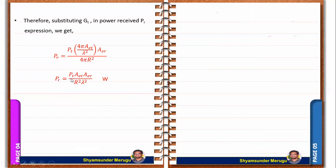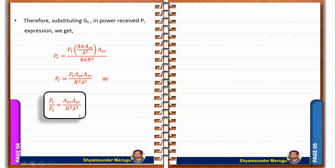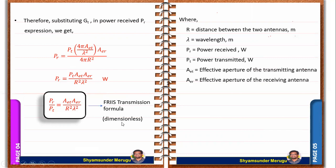Simplifying this expression, PR will be equal to PT·AET·AER divided by R²λ². Taking PT to the left side as the denominator, PR/PT will be equal to AET·AER divided by R²λ². This expression is called the Friis transmission formula, which is a dimensionless quantity.